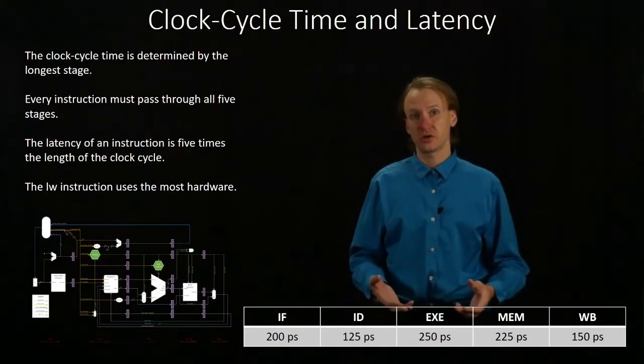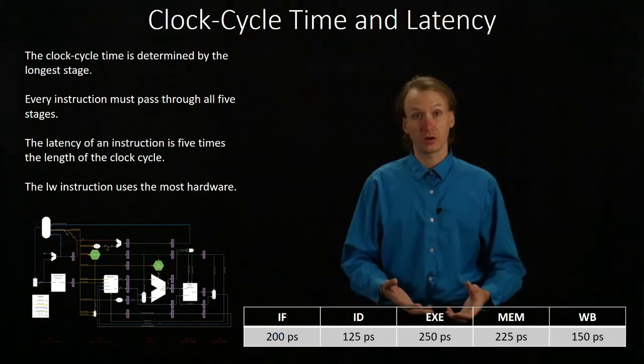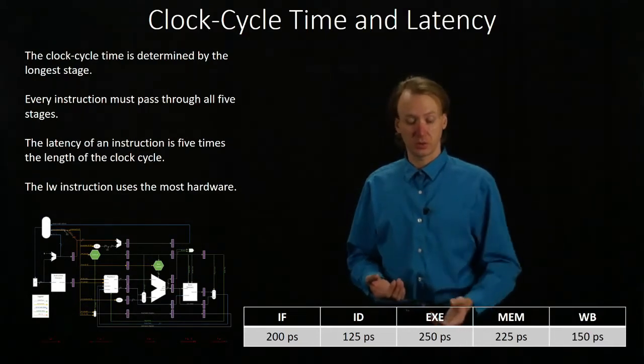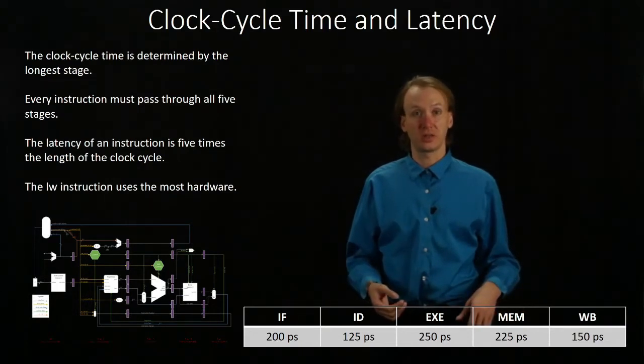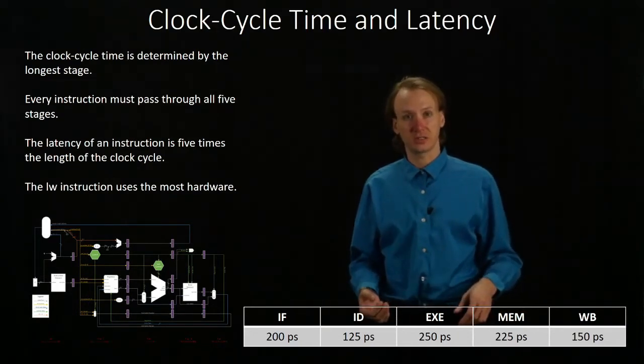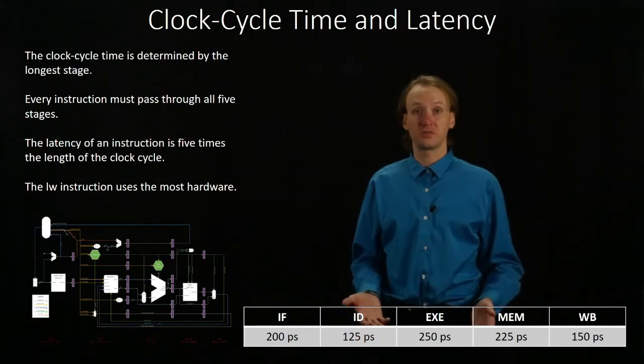Then to get the latency for one instruction, we take however long that clock cycle time is, 250 picoseconds, and we'll multiply by five. So that will give us 1,250 picoseconds. That would be the latency for one instruction.